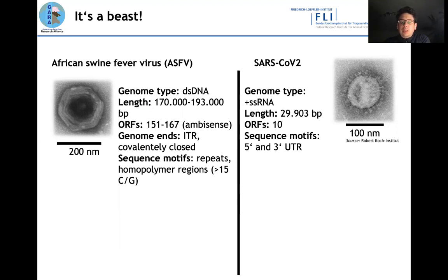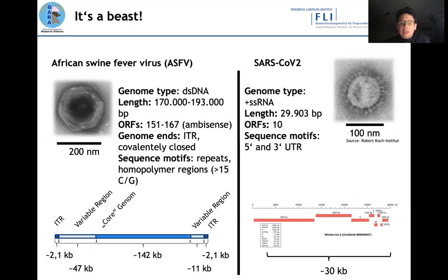We are also dealing with sequence motifs that complicate the sequencing process — for example, inverted terminal repeats, huge repeat sequences, and homopolymer regions of up to 15 G or C nucleotides. The ASF genome has a core genome that is relatively stable genetically, then two variable regions, and on the outer ends the inverted terminal repeats. Overall it is a huge genome, while SARS-CoV-2 has only 30,000 nucleotides and 10 open reading frames — quite easier to sequence.